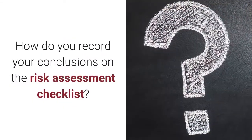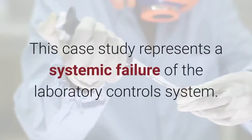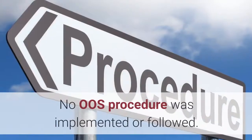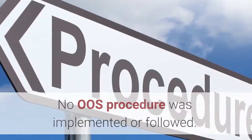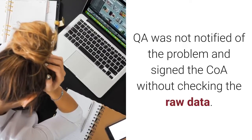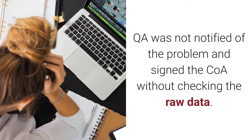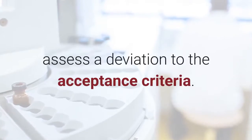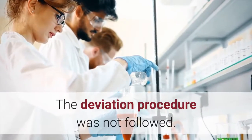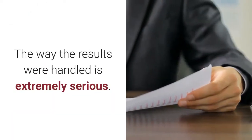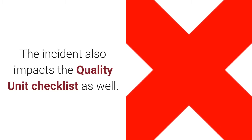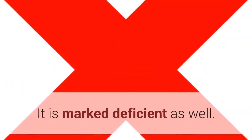How do you record your conclusions on the risk assessment checklist? This case study represents a systemic failure of the laboratory control system. No OOS procedure was implemented or followed. QA was not notified of the problem and signed the COA without checking the raw data. The method qualification system failed to adequately assess a deviation to the acceptance criteria. The deviation procedure was not followed. The way the results were handled is extremely dangerous. The scorecard is rated deficient. The incident also impacts the quality unit checklist, which is marked deficient as well.